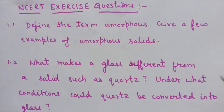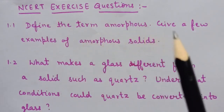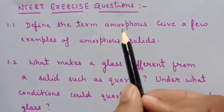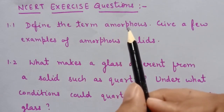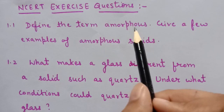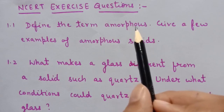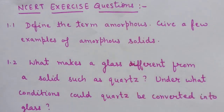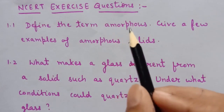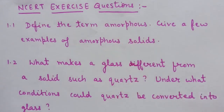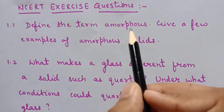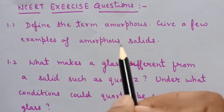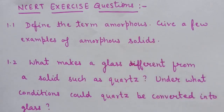Question 1.9: What type of solids are electrical conductors, malleable, and ductile? The answer is metallic solids. Now, NCERT exercise Question 1: Define amorphous. Give a few examples of amorphous solids. Amorphous solids are those in which constituent particles may have short-range order but not long-range order, and are arranged in a disordered manner. They have irregular shapes and are isotropic in nature. Examples: glass, rubber, and plastics.